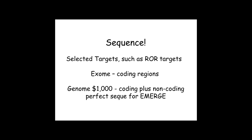The idea of sequencing — whether it's selected targets like the pharmacogenomics panel, return-of-results targets, or exome sequencing — whole genome seems perfect. The price is dropping; we're hearing $1,000. It's coding plus non-coding, which extends into areas of interest for mining GWAS studies. In terms of phenotype, I want to end with what has been most successful in applying sequencing in large-scale sequence-based consortia.